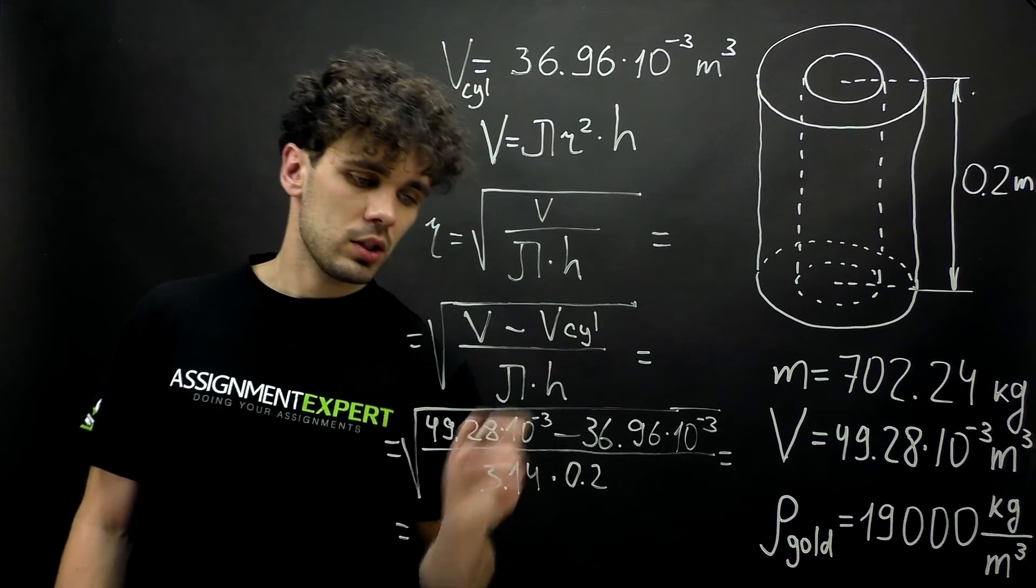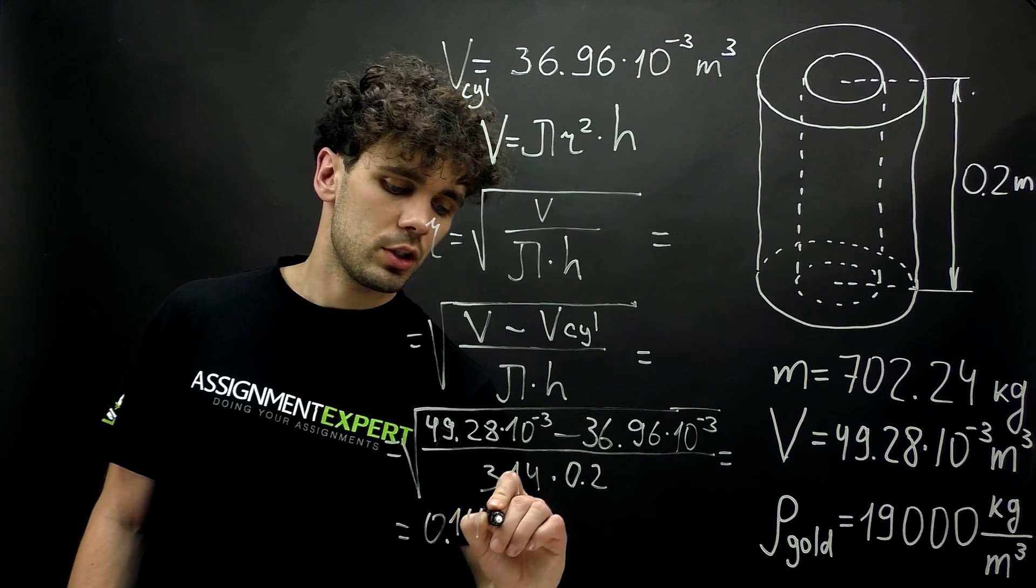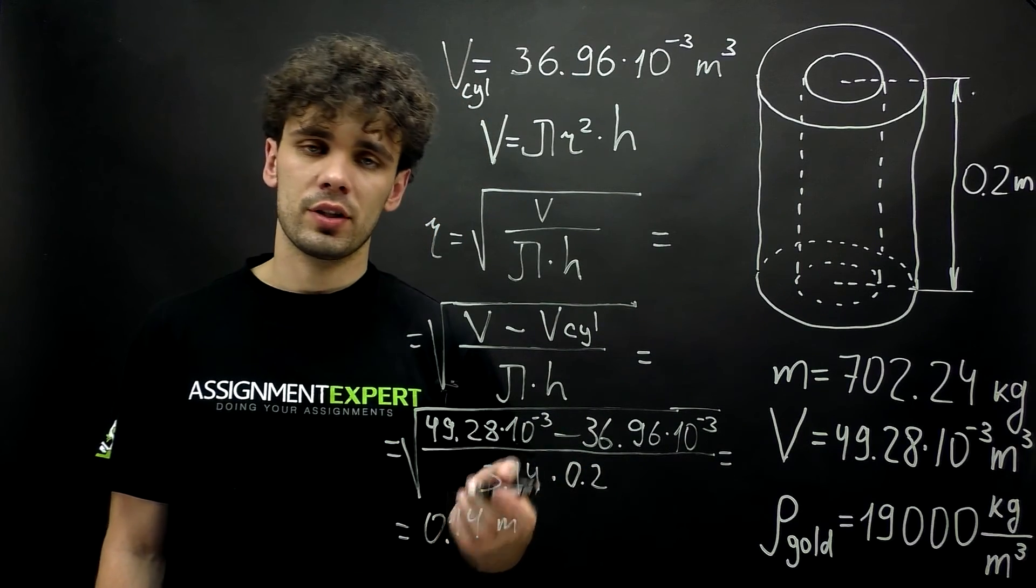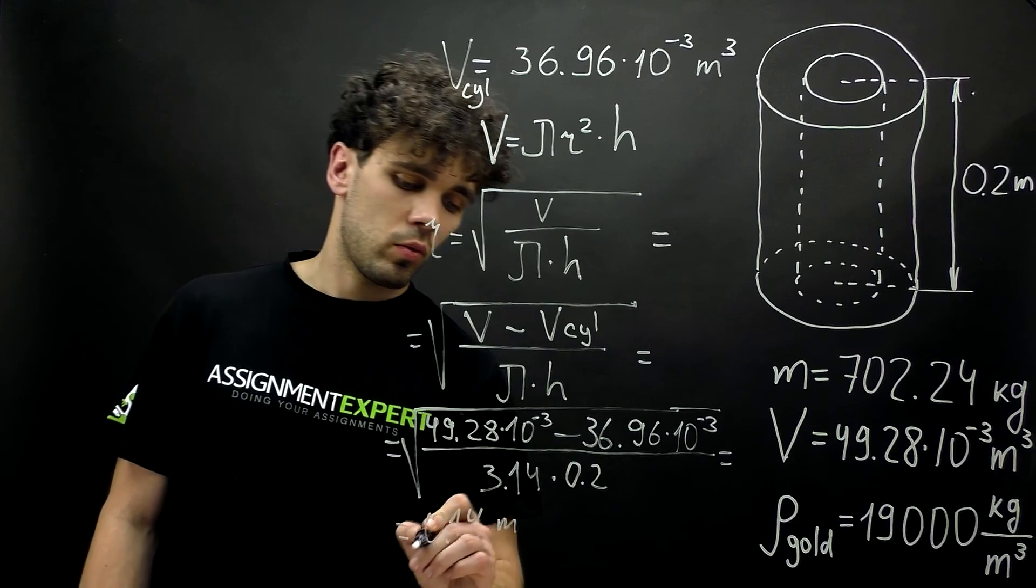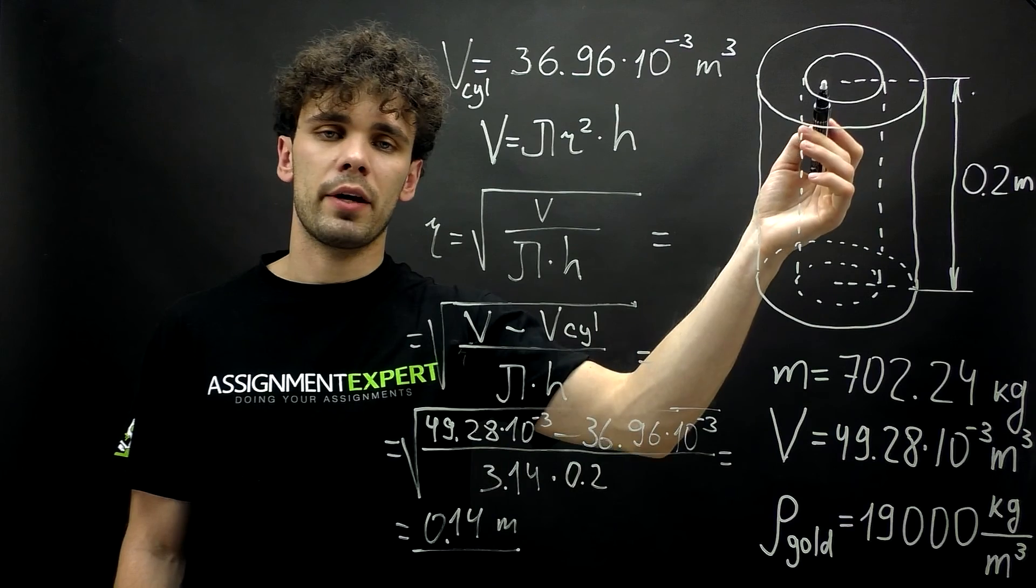And this gives us 0.14 meters or 14 centimeters. So this is the inner radius or the radius of the inner cavity of this cylinder.